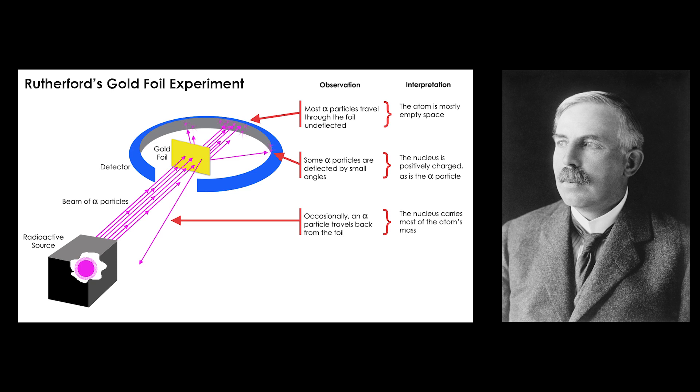he concluded that this led to the discovery of the nucleus of the atom and proposed the nuclear model of the atom, in which the positive charge and most of the mass of the atom are concentrated in the nucleus, where the electrons orbit around it.